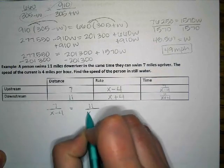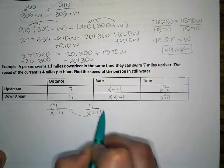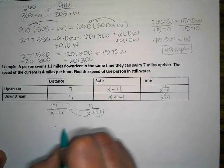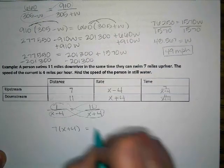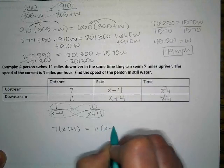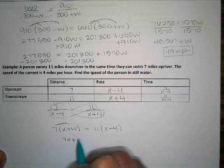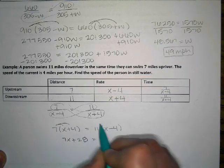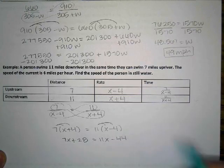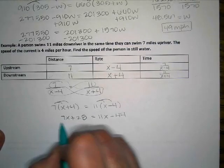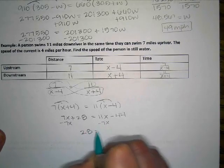And then to solve, I'm going to go ahead and cross multiply. So, 7x plus 28 equals 11x minus 44. And I can get my x's to one side. 4x minus 44. Or, I can keep my x's right here and move my numbers to the other side.